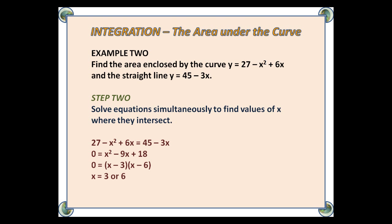So we put 27 - x² + 6x equal to 45 - 3x. Make one side 0 and factorize, and we get that x is either 3 or 6.